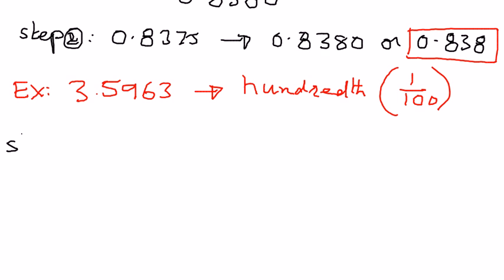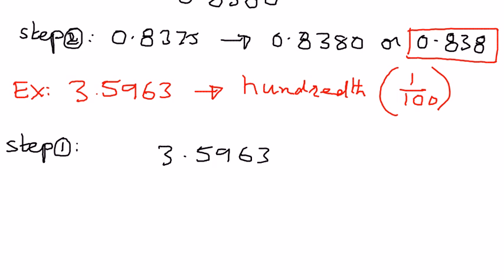Let's write these different steps to round this number. Step number 1: write the given number down — 3.5963 — and identify where we want to be. Where we want to be is in the hundredth place. 5 is in the tenth place, and 9 is in the hundredth place. So this is our given place value.